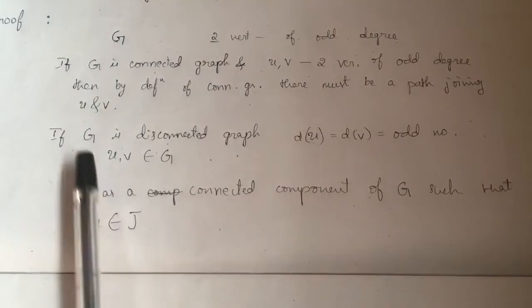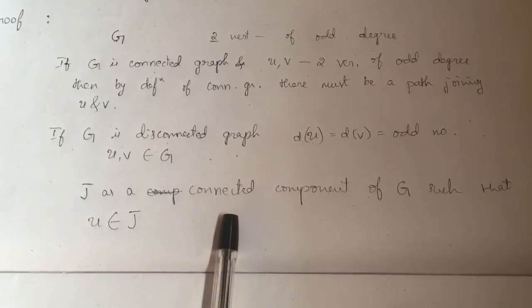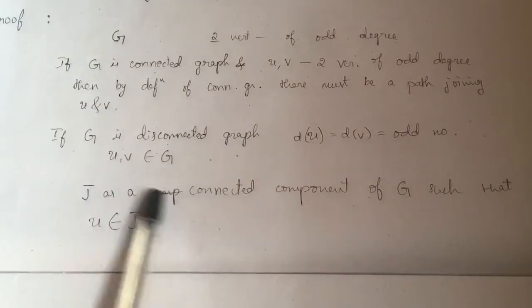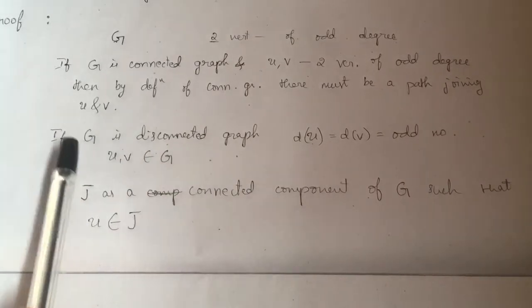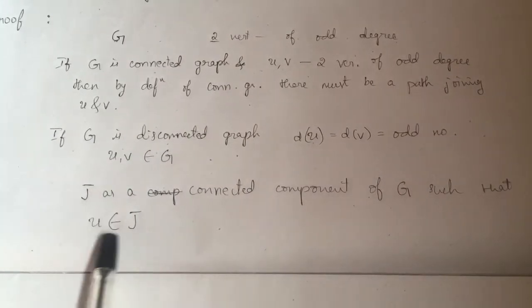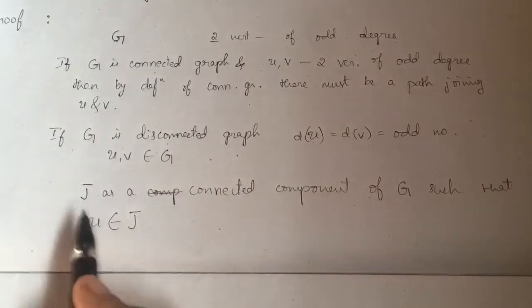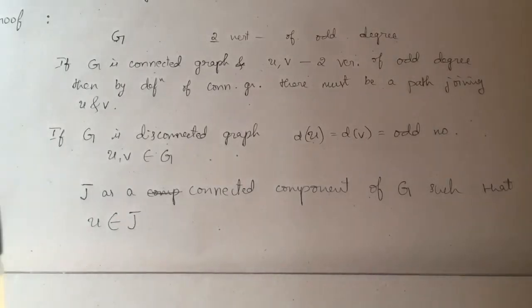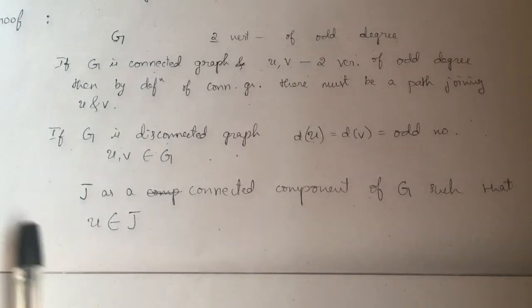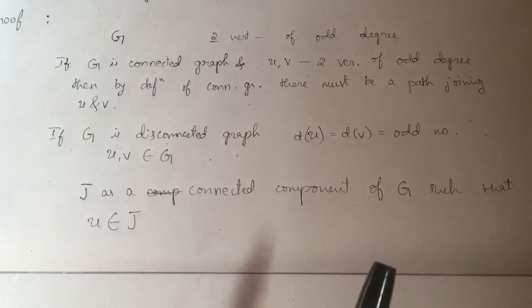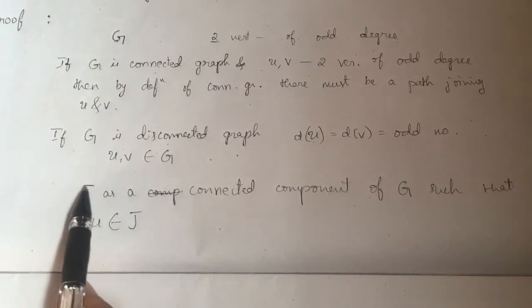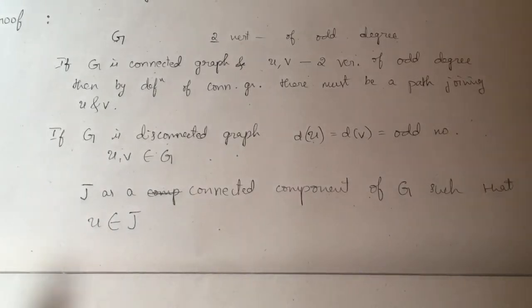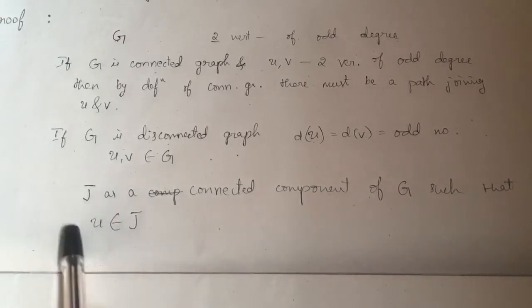G is disconnected, so there are components. Let me take one such connected component of G and I am taking one odd degree vertex in J. Now since J is also a graph, there must be one more vertex of odd degree, because we know that the number of vertices of odd degree in a graph must be an even number. Therefore, my connected component J must have one more vertex of odd degree along with U.